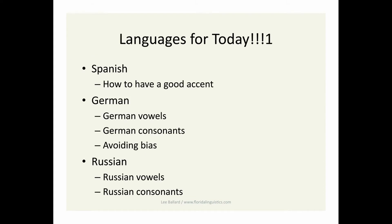Today we're going to talk about Spanish, German, and Russian. What are some things for English speakers to keep in mind in order to have a good Spanish accent? You're about to find out. Then we'll move on to German, which is famous for harsh-sounding consonants — I'll take you through the vowel system, show you some consonant patterns, and make some comments about how to avoid bias in linguistics. Finally, we'll listen to a little Russian. There's a lot of confusion out there about Russian vowels — I'll clear this up and show you how the vowel and consonant systems work together.